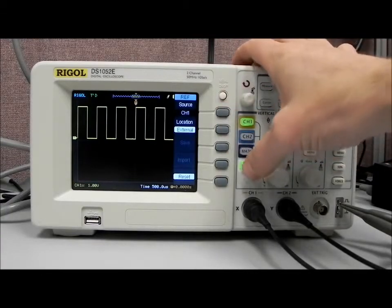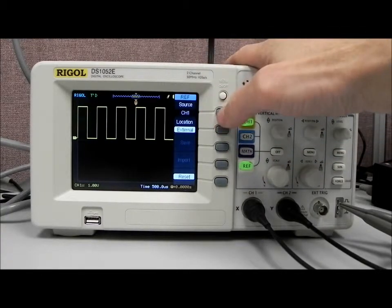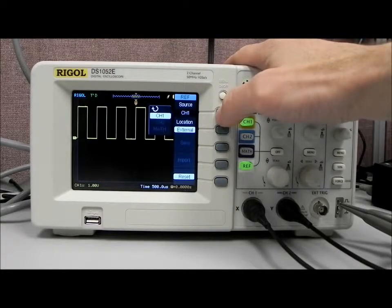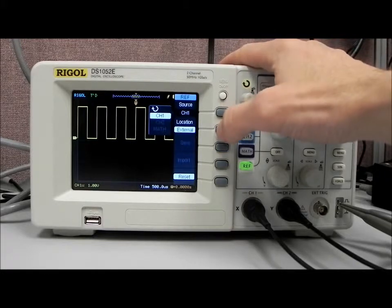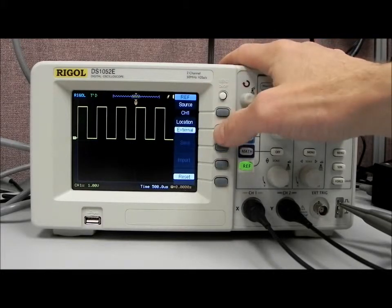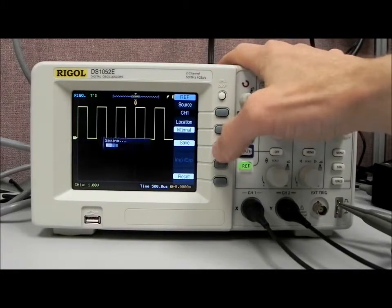What I'd like to do is, I press the reference. I'm going to actually grab a reference here. And you can select between channel 1 and channel 2 as long as channel 2 has been enabled. Or math. Now we're going to stick with channel 1. Now let's do internal. And let's hit save.